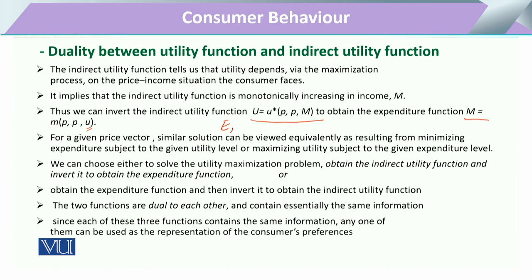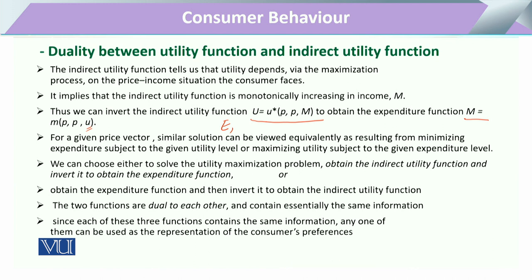Both functions are dual to each other and contain almost all the same information that can be utilized to have all the assumptions for utility maximization. Each of these three functions — utility maximization, the expenditure function, or the indirect utility function — has the same information and can be best utilized for the representation of consumer behavior. This tells us that if we have information related to the prices of commodities and we have the consumer's income, then we can derive the utility and derive the expenditure function.